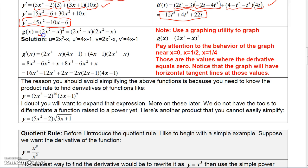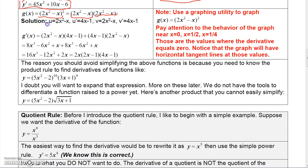This next example is a binomial squared. We don't yet know how to find the derivative of a function raised to a power — that's coming later. To work around this, write it as a product of two factors: (2x² − x)(2x² − x). So u = 2x² − x and u′ = 4x − 1; similarly v = 2x² − x and v′ = 4x − 1.